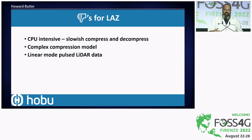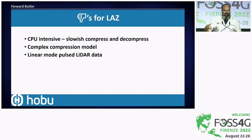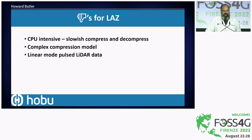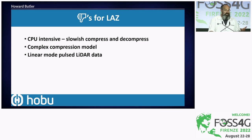Downsides of LASzip and LAZ: it can be CPU-intensive. It's slow to compress because it's trying to squeeze as much fluff out of the cloud as it can, though faster to decompress. It's chunked to allow you to seek across the file and only decompress chunks you need — that's the property we're taking advantage of with COPC. It has a complex compression model organized around linear-mode pulsed LiDAR, and not all point cloud data fits that model particularly well.